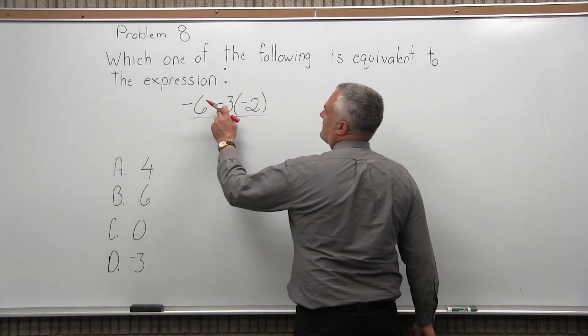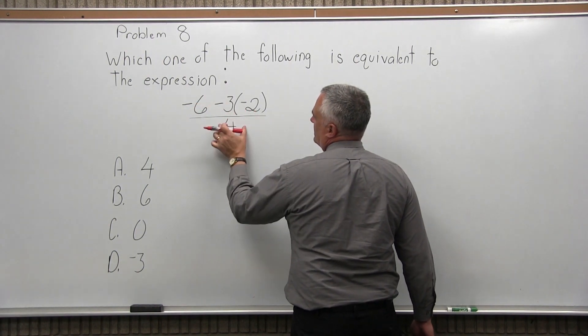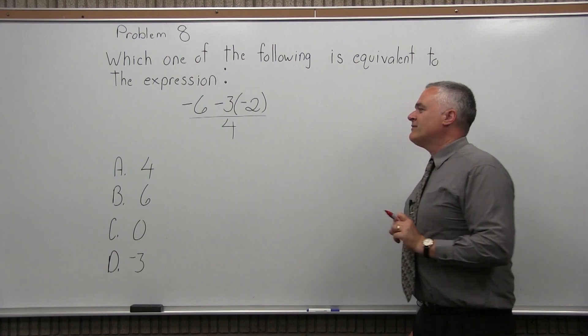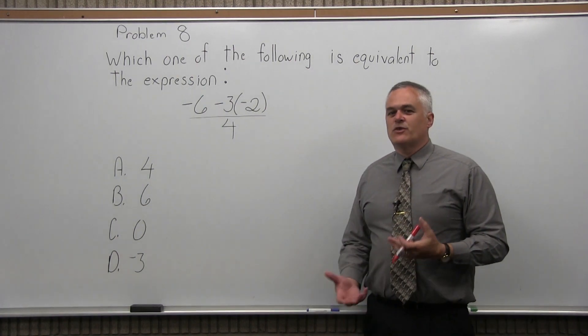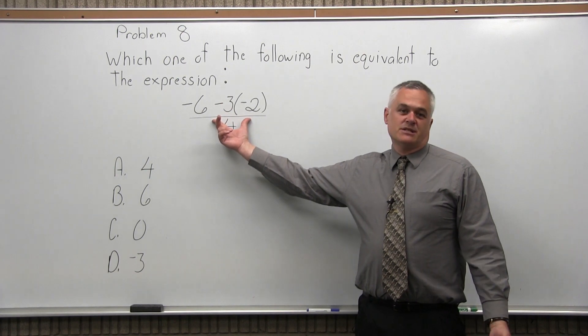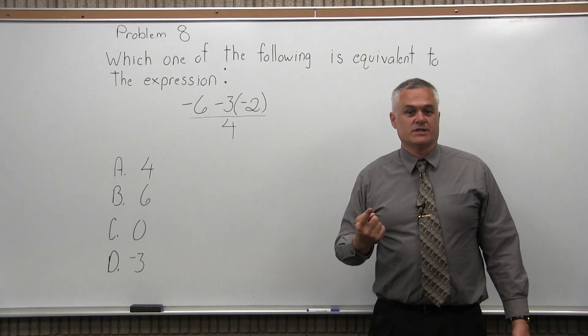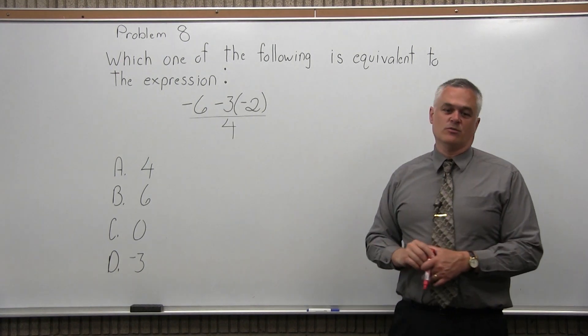So now we have a subtraction going on, and there's a multiplication, there's a division. You have to do parentheses first. Now you don't see any parentheses, but this fraction bar is considered like a type of parentheses, a grouping symbol. So we have to get the numerator down to one number. That's the first thing we have to do, one value in the numerator.